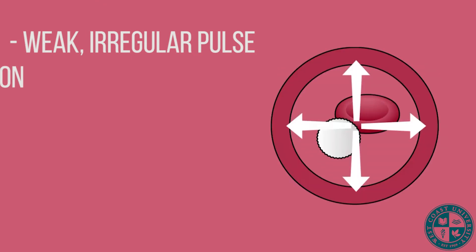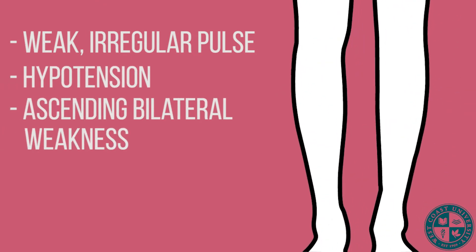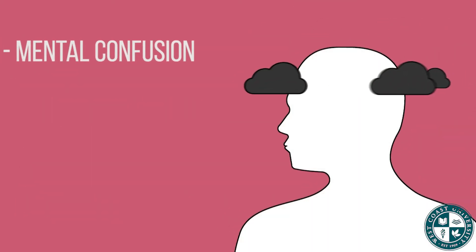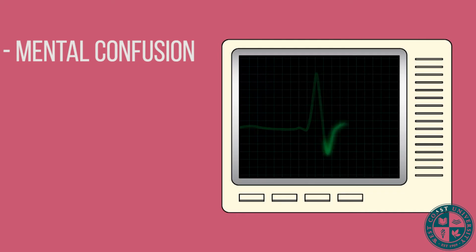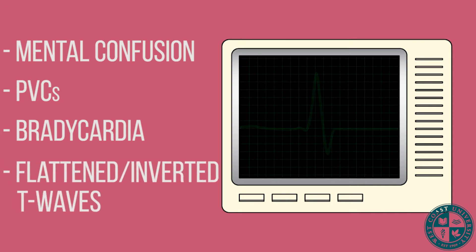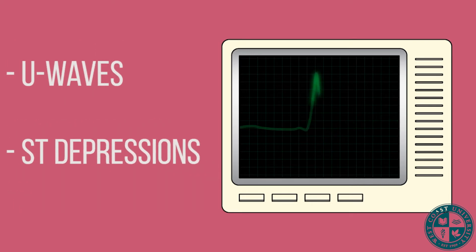What are the expected findings on this client? They can have a weak irregular pulse, hypotension, ascending bilateral weakness, hyperactive reflexes, and mental confusion. On the EKG, we can see PVCs, bradycardia, flattened or inverted T waves, U waves, or ST depressions.